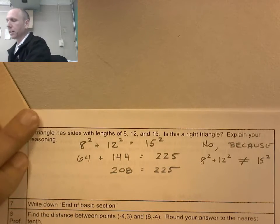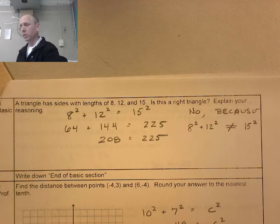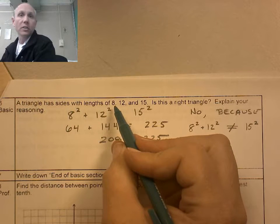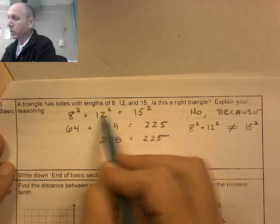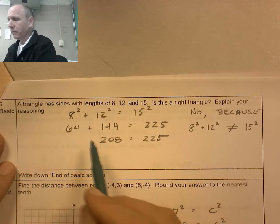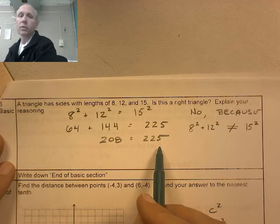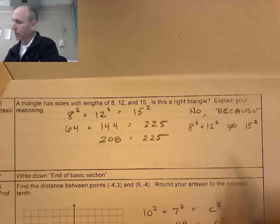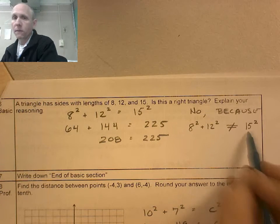Number 6. A triangle has sides of 8, 12, and 15. Is this a right triangle? Explain your reasoning. Well, the two smaller sides are the legs, and the larger one is the hypotenuse. So 8 squared plus 12 squared has to equal 15 squared. Does it? 208 does not equal 225. Since they do not equal each other, this is not a right triangle. No, because 8 squared plus 12 squared does not equal 15 squared.